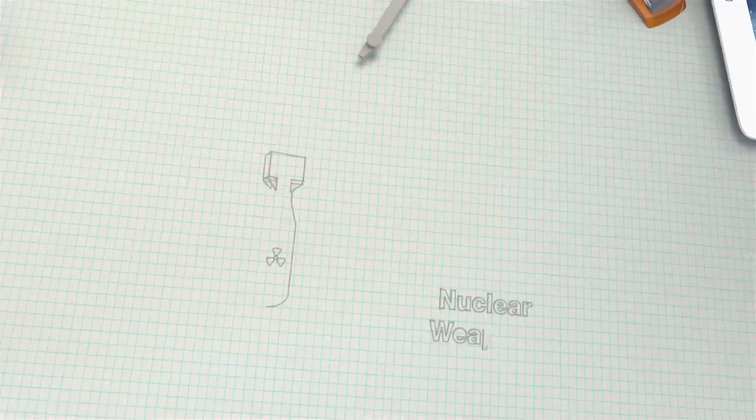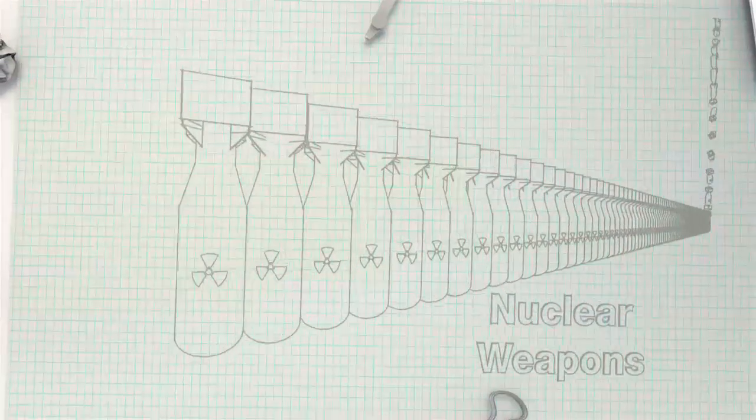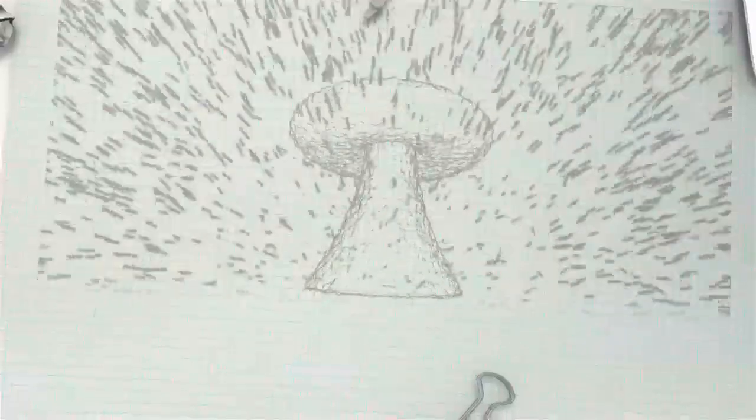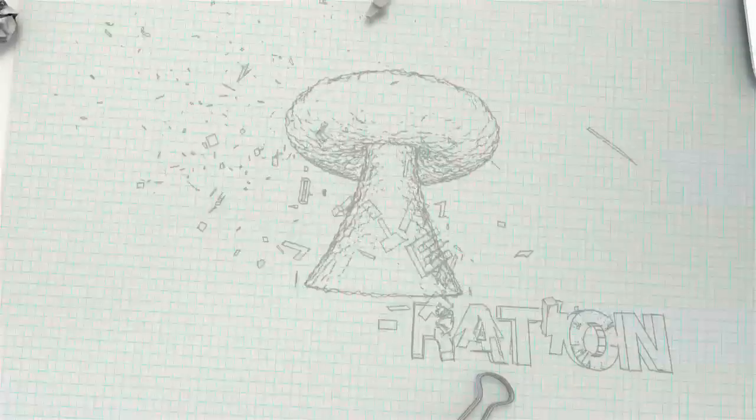It's also very hard to create weapons from the byproducts of thorium reactors, and it's impossible to create them by enrichment. The threat of proliferation is therefore basically eliminated.